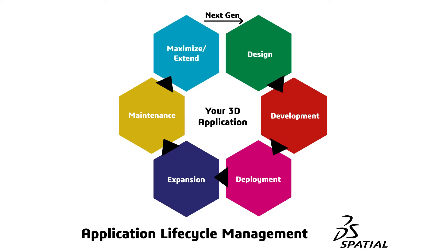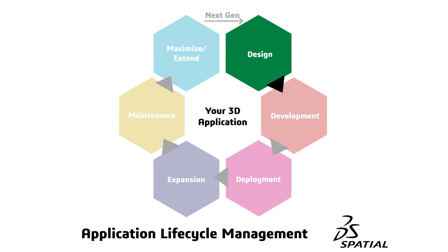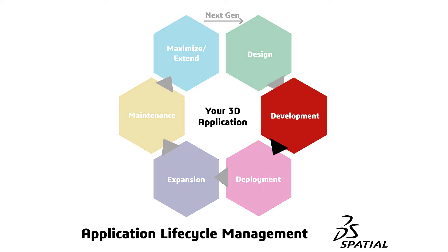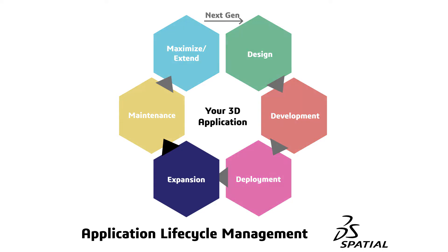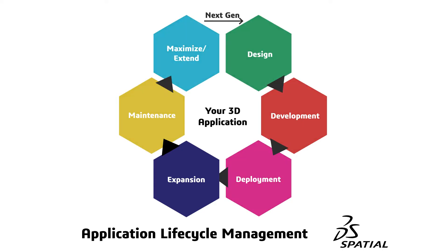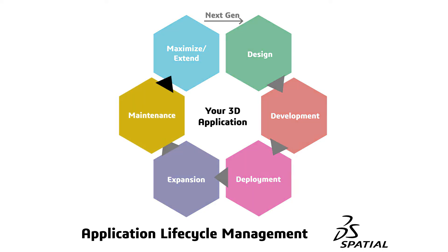The ALM framework includes six essential application lifecycle stages: design, when the scope of the solution or problem to be solved is described and sketched out; development, when the actual coding and testing is performed; and deployment, when the application is released to the public and any uncaught bugs are fixed.